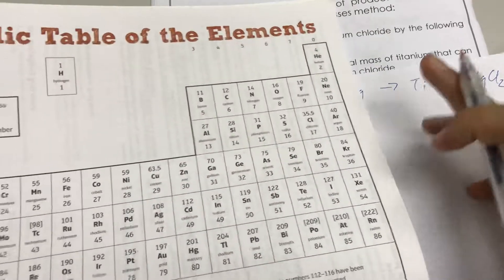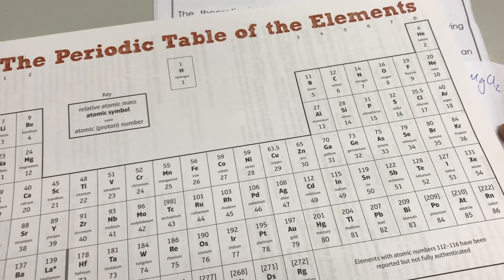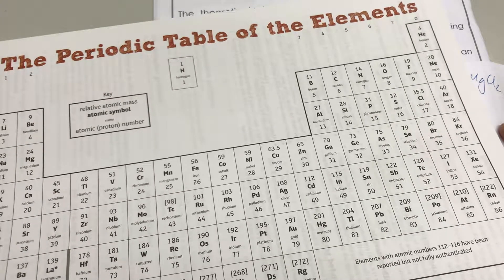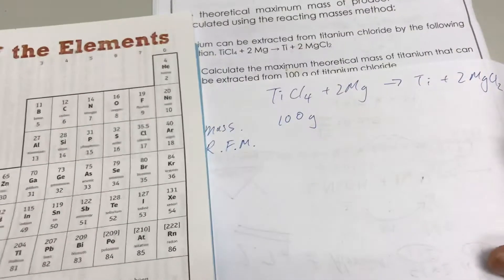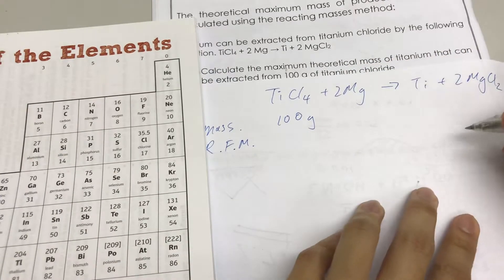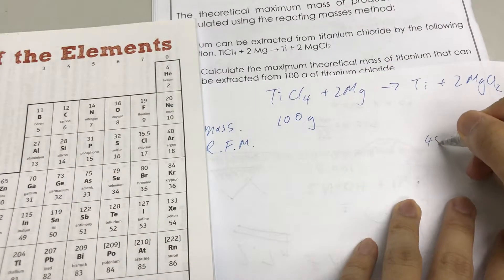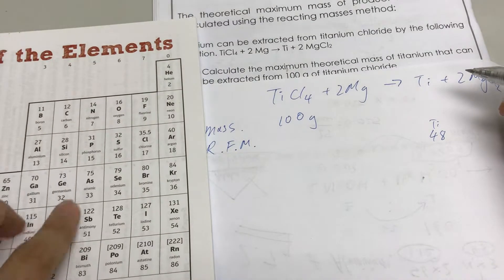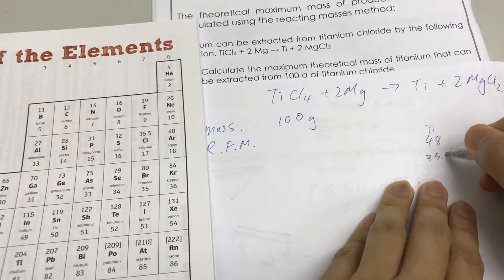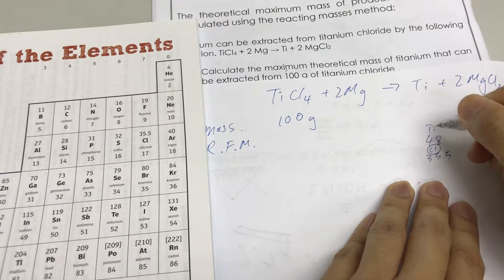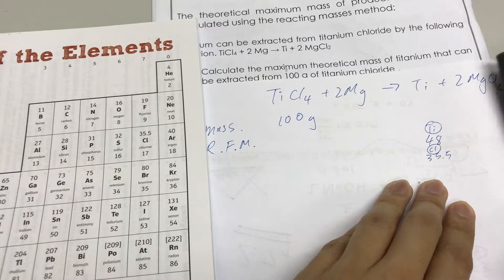For titanium, if we look for it, over here, the mass number is 48. Let's put it to the side, so 48 is the molar mass of titanium. And then chlorine is 35.5 for chlorine. You have titanium plus chlorine, 35.5 times 4 plus 48, so 190.